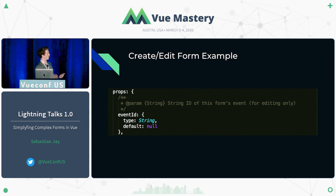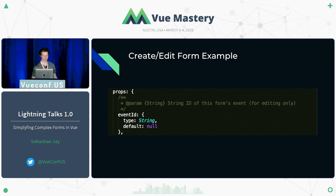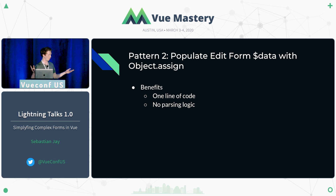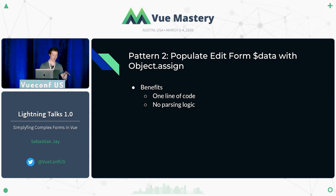In this example, we'd have an event ID with a default of null — and of course this could extend to whatever you're doing, whether it's burgers or cheese, some example besides events. Next, populating the data with Object.assign. The benefit here is that it can be really simple, reliable, and robust — basically just one line of code to populate your data once it's loaded from the server. You don't need to be parsing logic to break anything out if you structure your form in the right way.